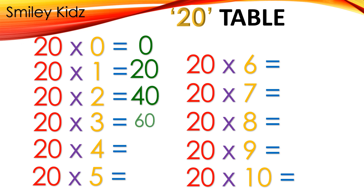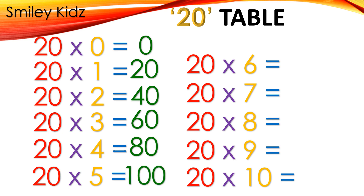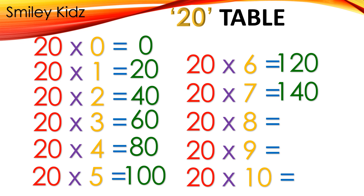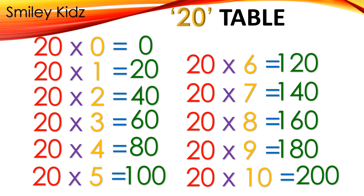Table 20: 20×0=0, 20×1=20, 20×2=40, 20×3=60, 20×4=80, 20×5=100, 20×6=120, 20×7=140, 20×8=160, 20×9=180, 20×10=200.